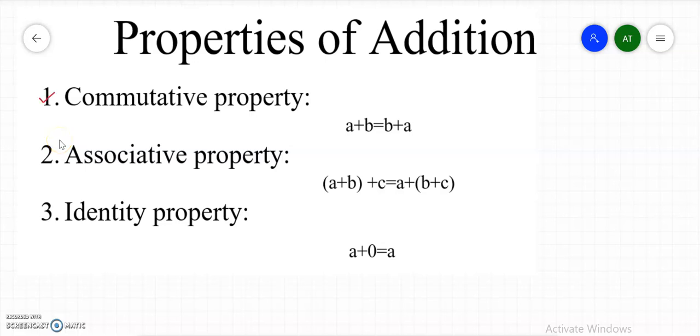Commutative property. In commutative property, we need two numbers, A and B, and we switch the orders.